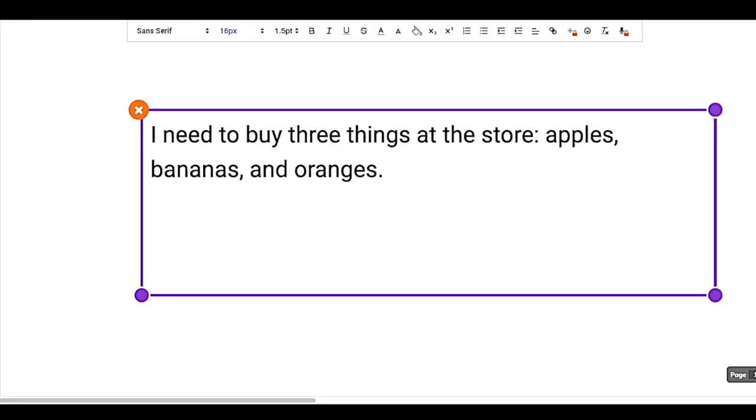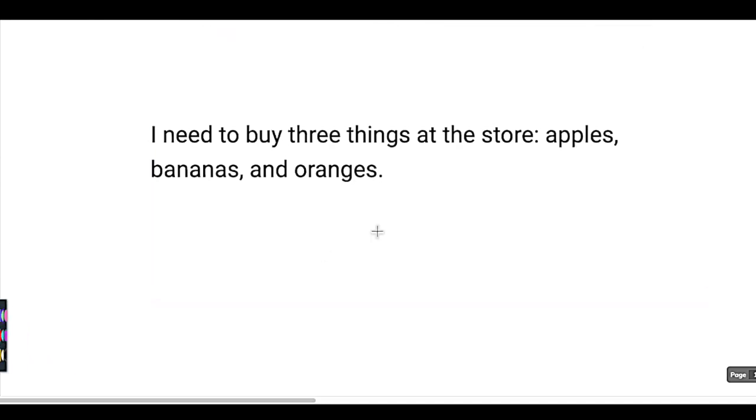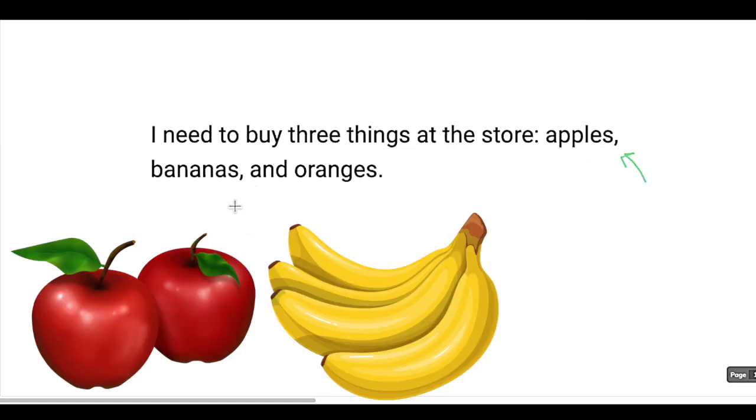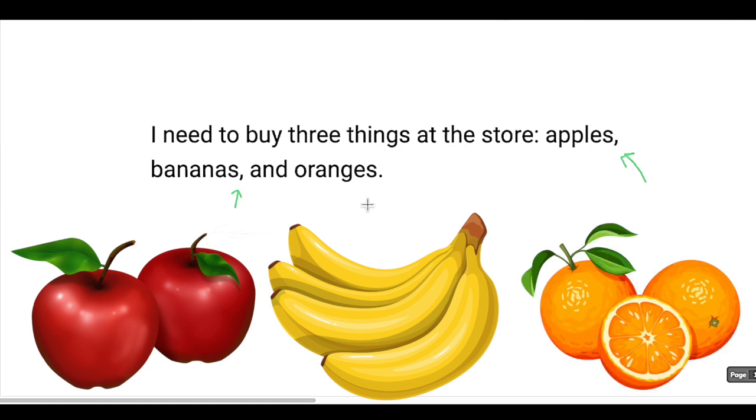And rule number two, it's not quite as simple, but once you know what to look for, it's pretty easy to spot. To understand the second rule, it's important that you first understand the comma rule that it stems from. And you probably do because this is the most common comma rule. We use commas to separate items in a list. We can see that here pretty clearly. I need to buy three things at the store. Our first item is apples, so we get a comma. Second item is bananas, comma, and oranges. Pretty simple.